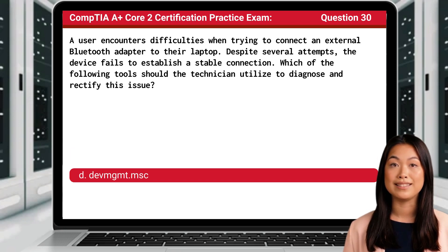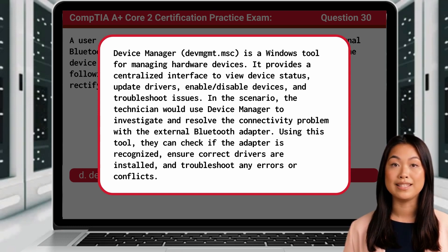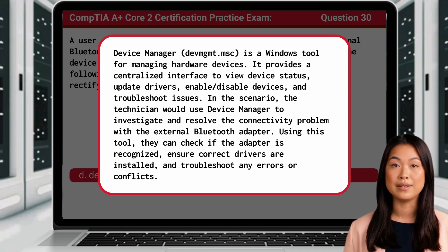The answer is D: DevMGMT.msc. Device Manager, which can be accessed using the DevMGMT console file, is a Windows tool for managing hardware devices. It provides a centralized interface to view device status, update drivers, enable or disable devices, and troubleshoot issues. In this scenario, the technician would use Device Manager to investigate and resolve the connectivity problem with the external Bluetooth adapter. Using this tool, they can check if the adapter is recognized, ensure correct drivers are installed, and troubleshoot any errors or conflicts.